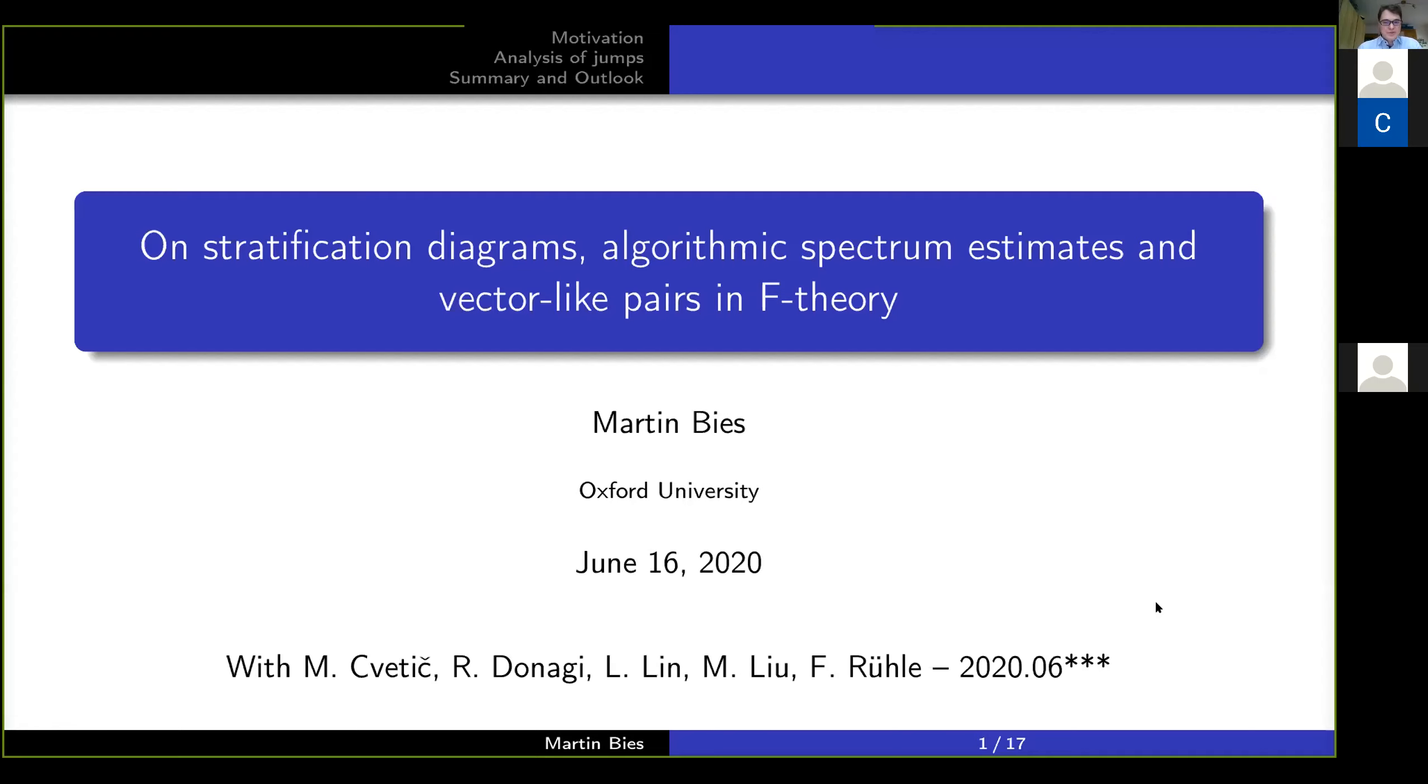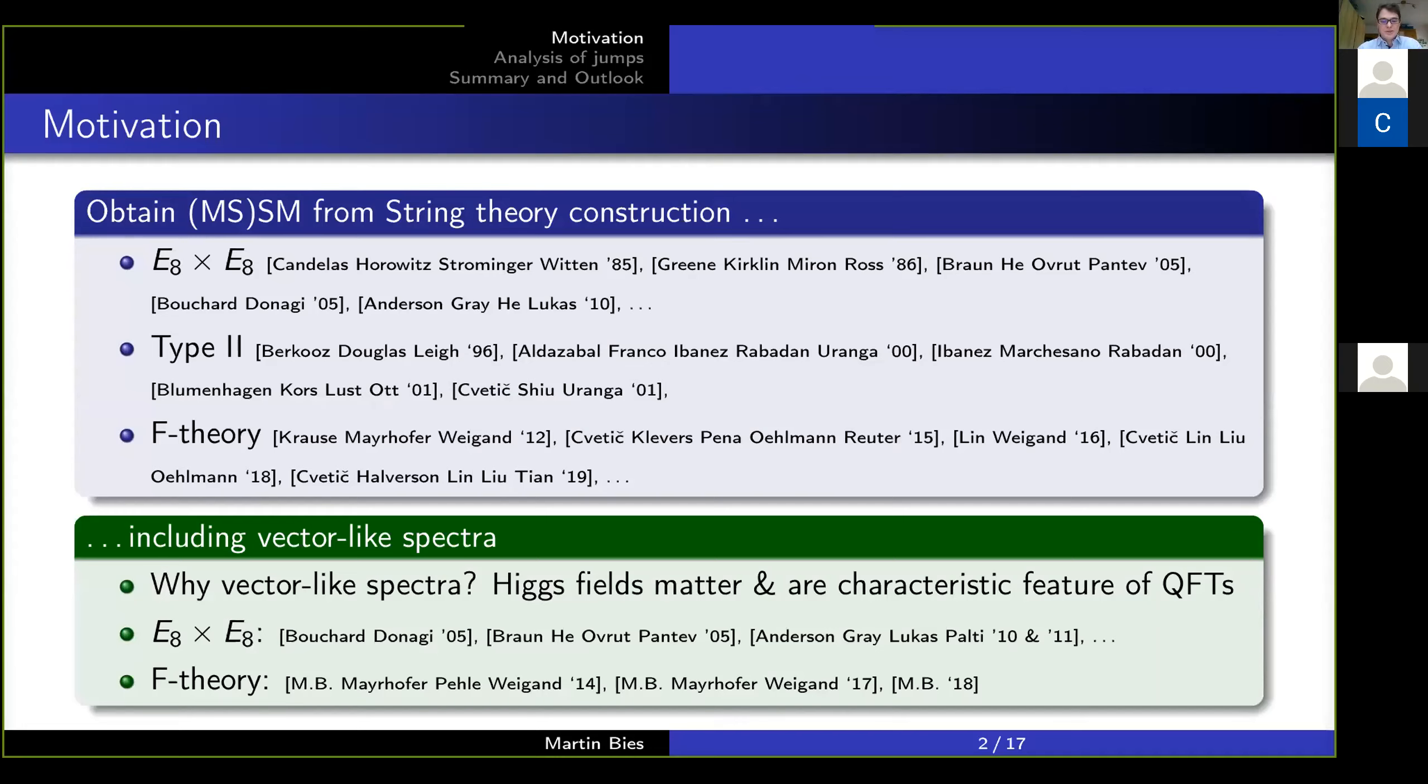The motivation for this work is an outstanding question, namely, how do you actually get the standard model out of string theory? This has been done by lots of people. My focus is on the vector-like spectrum in such compactifications, because the vector-like spectrum encourages the Higgs fields, and these matter quite literally.